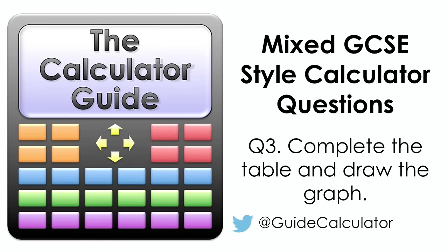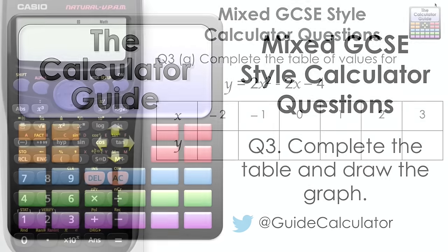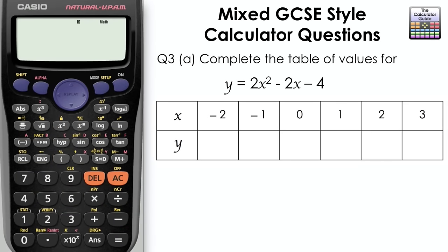In this question we are going to use table mode to complete a table and then draw the graph of a function. Question 3 part A: we need to complete the table of values for the function y equals 2x squared minus 2x minus 4.